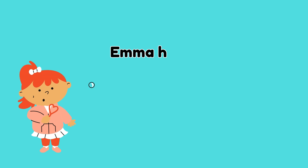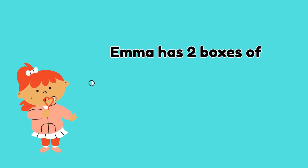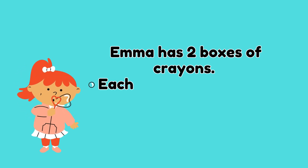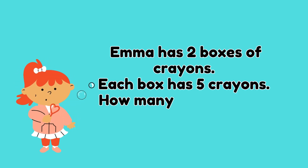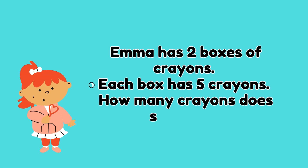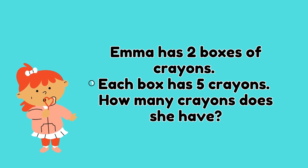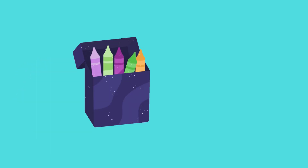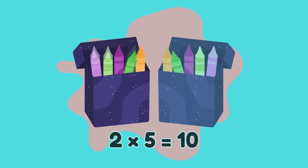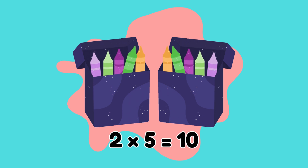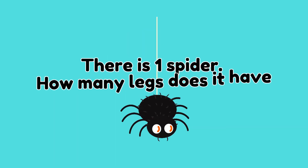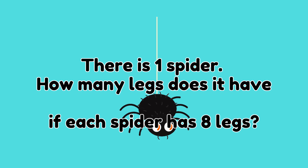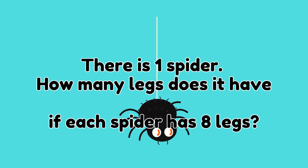Here are more multiplication word problems for you to practice. Are you ready? Emma has two boxes of crayons. Each box has five crayons. How many crayons does she have? Two times five is equal to ten — ten crayons!